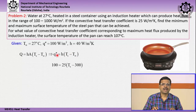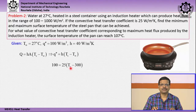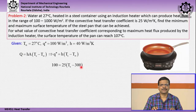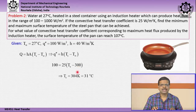The heat flux is 100 W/m², h = 25 W/m²·K, and we need to find the surface temperature Ts. T∞ = 27°C converts to 300 K. Solving the expression for Ts gives Ts = 304 K, which converts to 31°C.